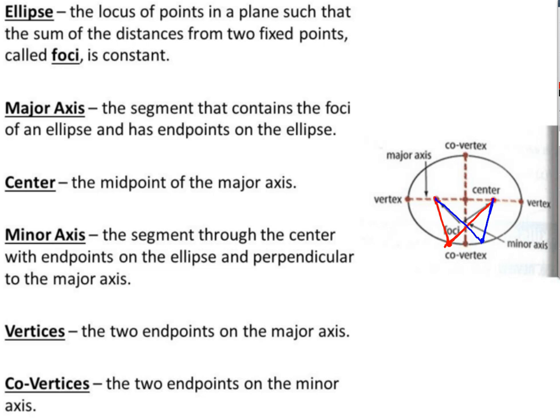The major axis is the segment that contains the foci of the ellipse and has endpoints on the ellipse. The center is the midpoint of the major axis. The minor axis is a segment through the center with endpoints on the ellipse, perpendicular to the major axis. Vertices are the two endpoints of the major axis, and the co-vertices are the endpoints of the minor axis. The stretched-out part is the major axis with its vertices; the squished part is the minor axis with its co-vertices.